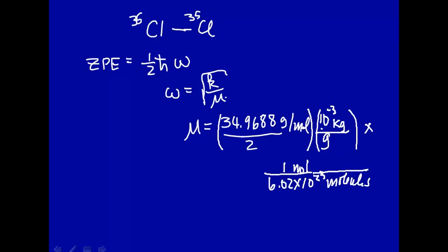So when we're doing these calculations, make sure we put—and if we want the SI units, make sure we put this in kilograms and this in molecules, because we're doing it for one molecule. So the reduced mass in this case comes out to be 2.904 × 10⁻²⁶ kilograms per molecule.